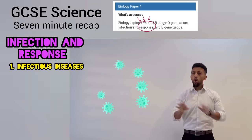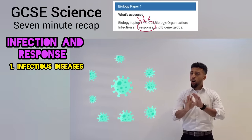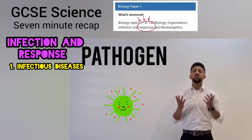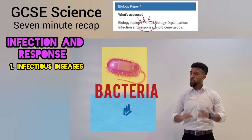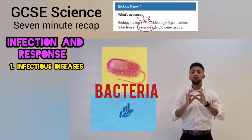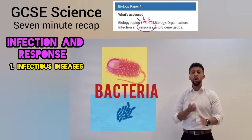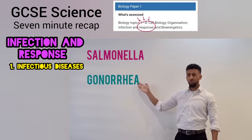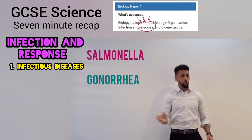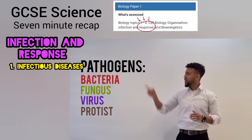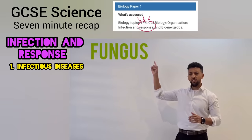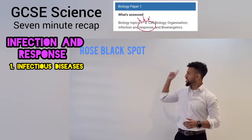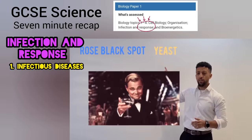Microbes are small — not all of them are calm. If you catch a pathogen then that will cause you harm. Starting with bacteria — they divide so rapidly, you better wash your palms. Salmonella's one, another's gonorrhea. Fungus is another type of microbe — rose black spot is a pathogen and yeast is used for making beer.